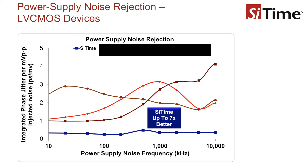In a controlled test to evaluate power supply noise sensitivity, a waveform generator was used to add system noise at a specified voltage and frequency to measure the effect of power supply noise on oscillator jitter. You can see on the graph that Sidetime's MEMS oscillator jitter is lower across all noise frequencies, even when a 50 millivolt peak-to-peak switching noise is injected into the system.